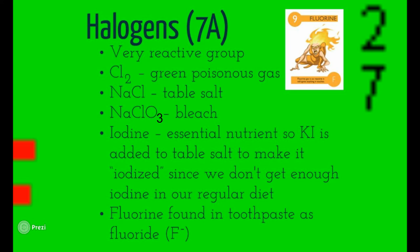Iodine is actually put in table salt to iodize it, since we don't get enough iodine in our regular diet — that prevents thyroid conditions. Fluorine is found in toothpaste — that's what keeps your teeth clean. There's also fluorine in drinking water to help strengthen teeth. It's a little poisonous in small doses; in large doses, very poisonous. But a little bit in toothpaste strengthens your teeth, which is why it's in every single tube — that's why you're supposed to spit it out and not eat it.